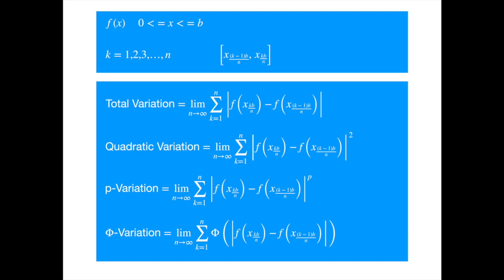Note the unit of p-variation as defined above is the p-th power of the unit of the deviation, so you'll frequently see that the p-variation is defined as the p-th root of the above. But we will not worry about this. We will only focus on the first and second variations, as we can go a long way with just these two concepts.